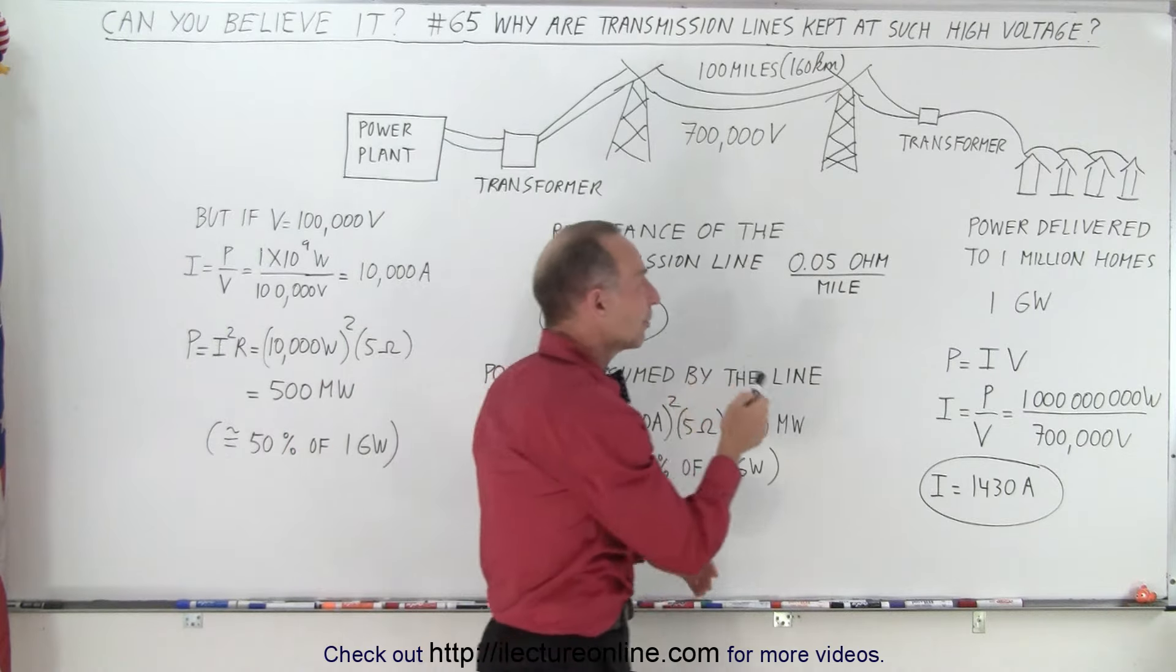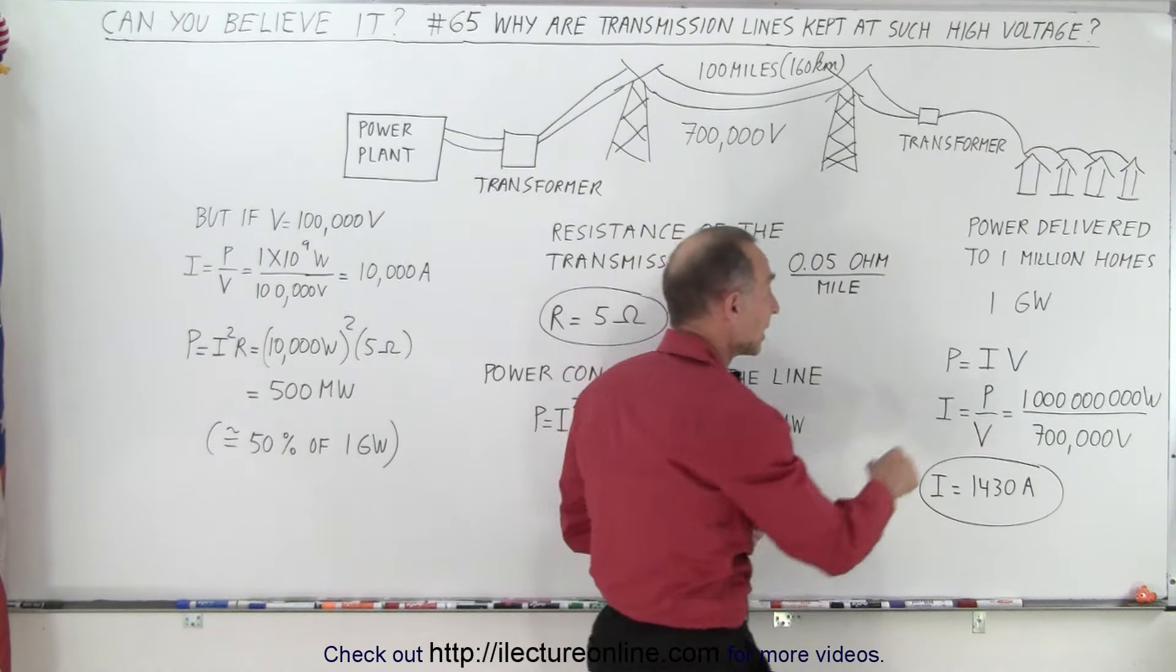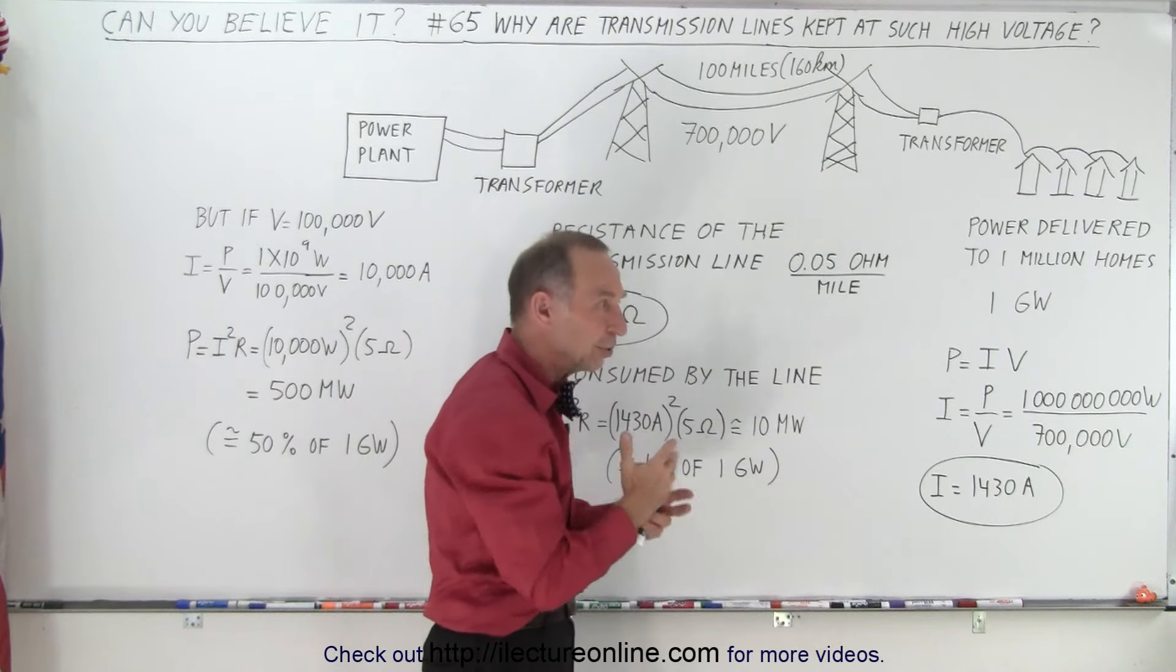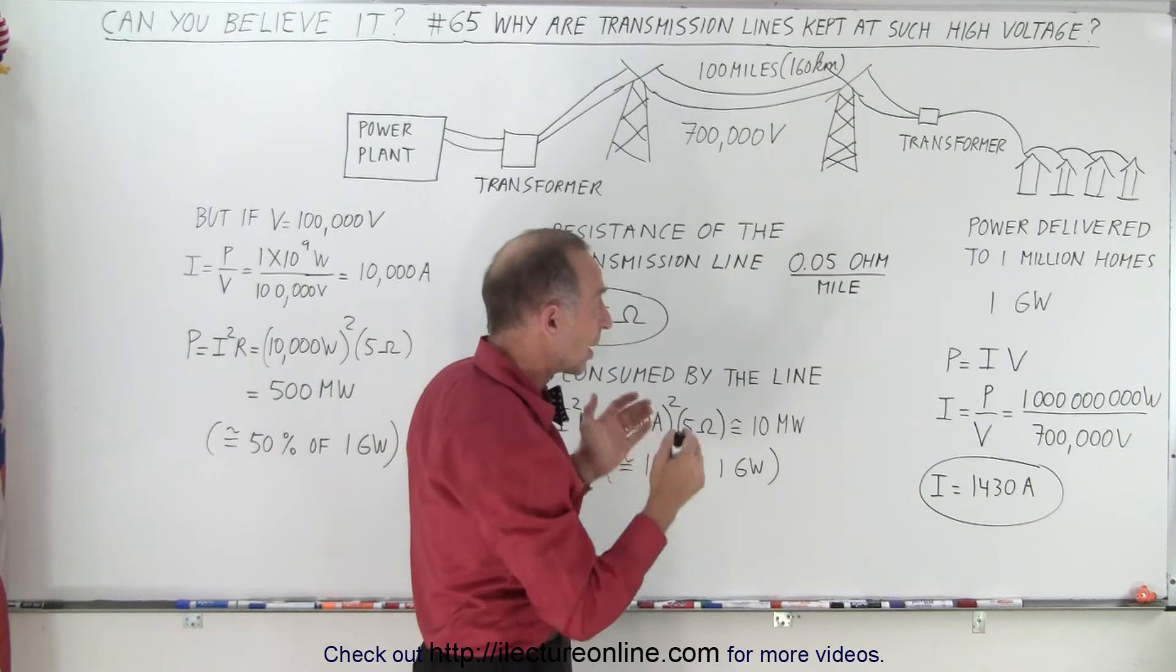So let's say we're trying to deliver power to a million homes, that's a fairly good-sized city, and that requires one gigawatt of power on average, about a kilowatt per house on average. Sometimes of course they require more, but let's say a gigawatt of power to a million homes.